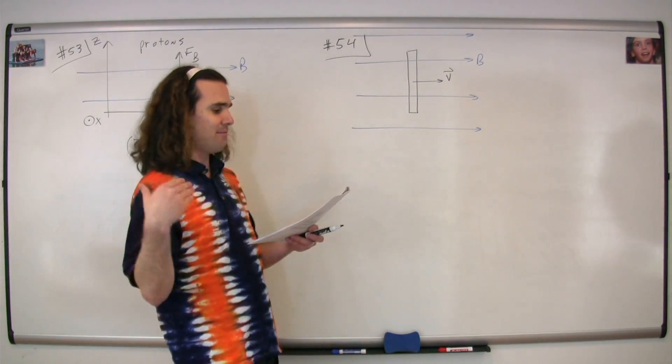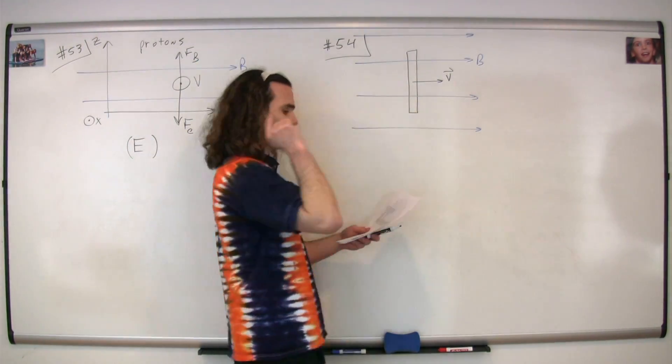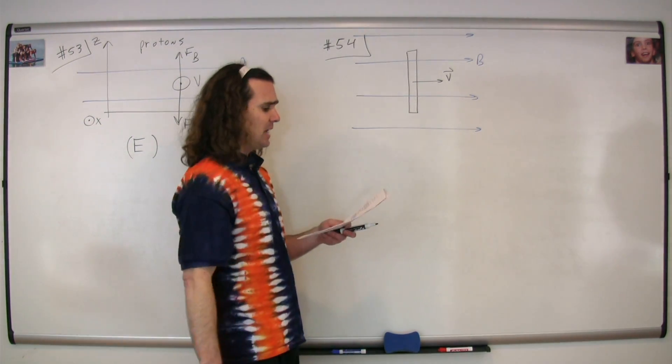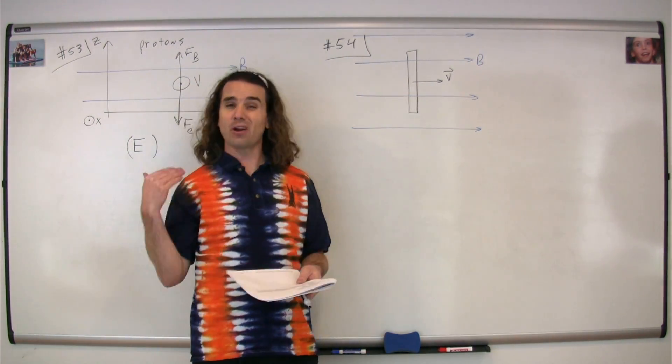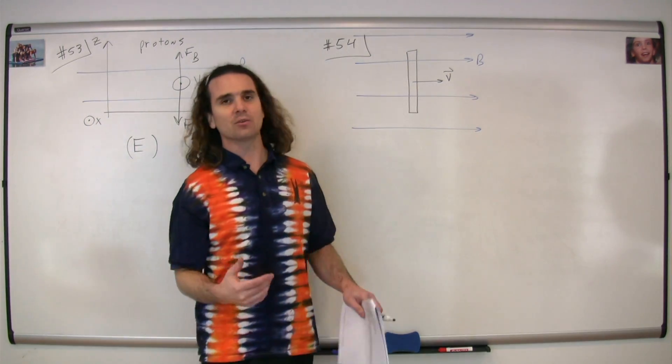Question number 54, we have a vertical length of copper wire that moves to the right at a steady velocity V in a magnetic field which is also to the right. Which of the following describes the induced charges on the ends of the wire?